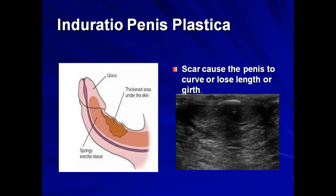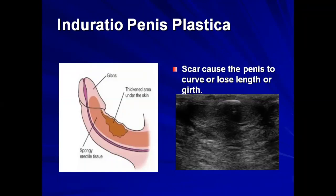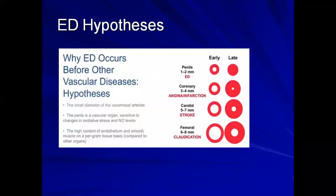Induratio penis plastica, commonly known as Peyronie's disease, is debatably part of erectile dysfunction. In Peyronie's disease, scarring occurs on the surface of the penis, causing it to curve at a painful angle for the partner. Calcific deposits form, as visible on imaging. This angulation is why some men develop problems with sexual performance.